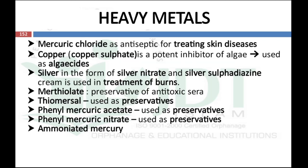Examples of heavy metal disinfectants: mercury chloride is used as an antiseptic for treating skin diseases. Copper as copper sulphate is a potent inhibitor and is used as an algaecide. Silver in the form of silver nitrate and silver sulfadiazine cream is used in the treatment of burns. Merthiolate is used as a preservative for antitoxin sera. Thiomersal is used as a preservative. Phenylmercuric acetate and phenylmercuric nitrate are also used as preservatives.